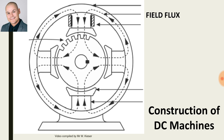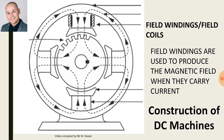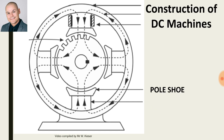The field flux is what is generated by the field windings. The field windings, also known as the field coils, are used to produce the magnetic field when they carry currents. The pole shoe, also known as the pole core, is bolted onto the end of the pole core and helps to hold the field windings in place.